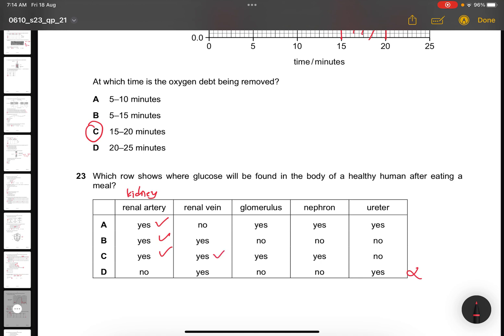Glomerulus, there will be glucose found. This will be no, out. And then nephron, yes. Ureter, no. Because if your glucose comes out through the urine, it shows that you have diabetes. So the answer is C.